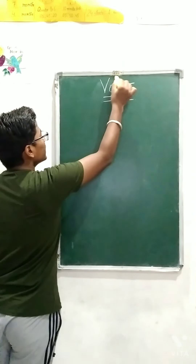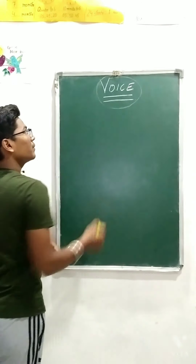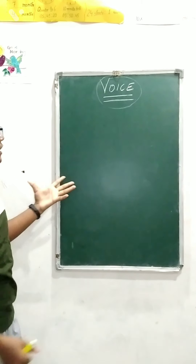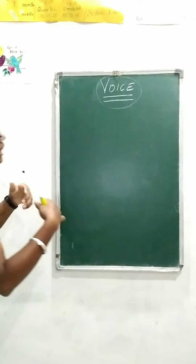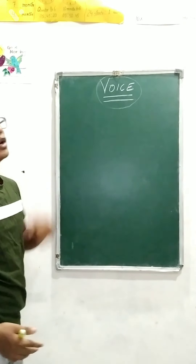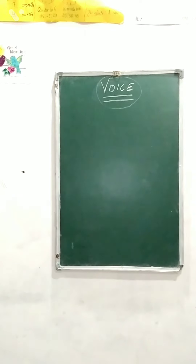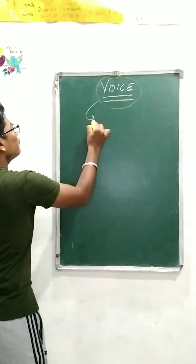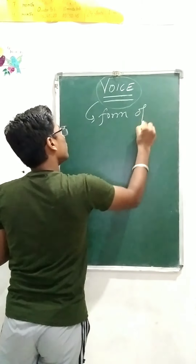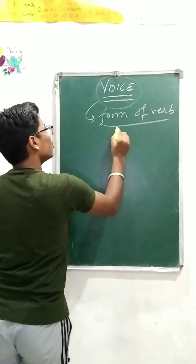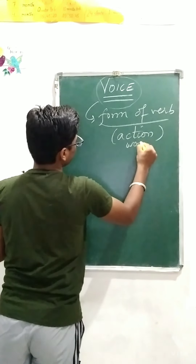First of all we will see what is voice, its types, and how we interchange subject and object in voice when a sentence is given. Voice is a form of verb that shows whether the subject of a sentence performs the action — it represents a form of verb that shows some action.